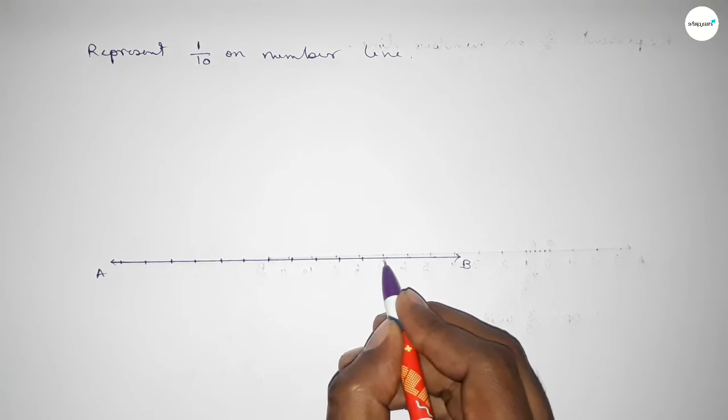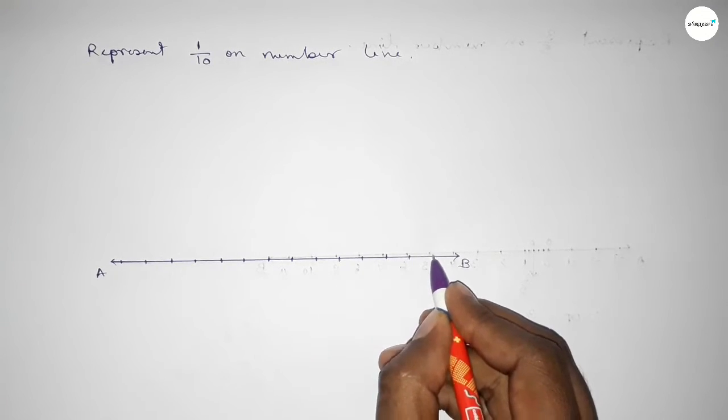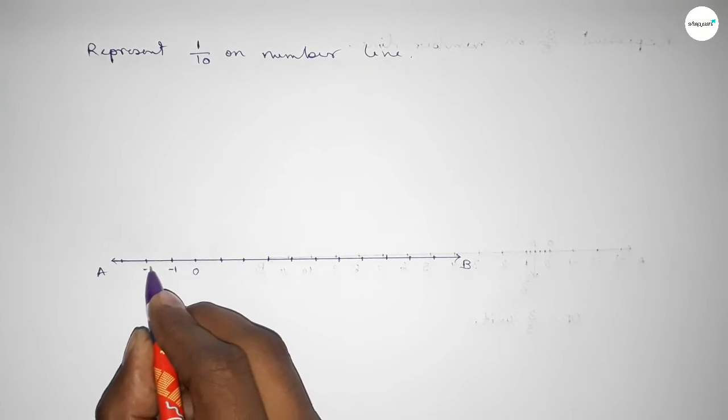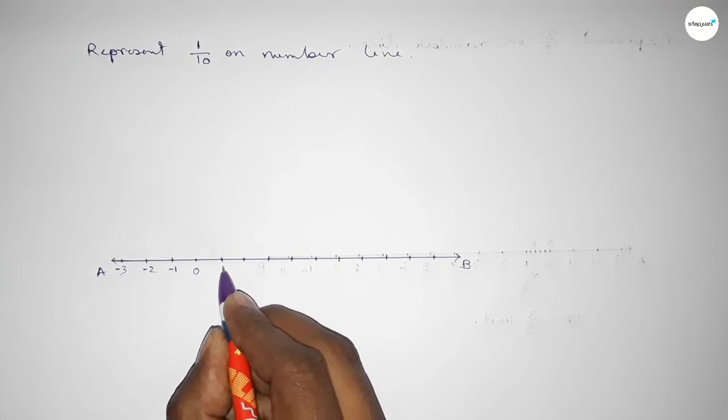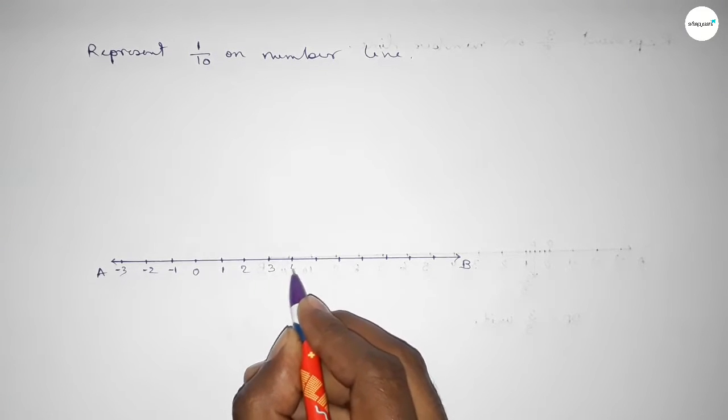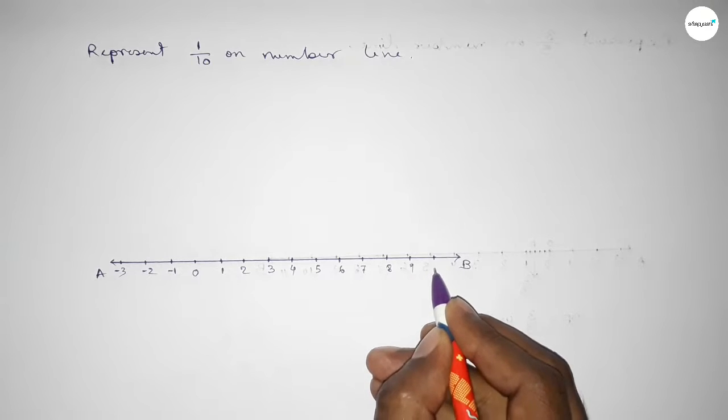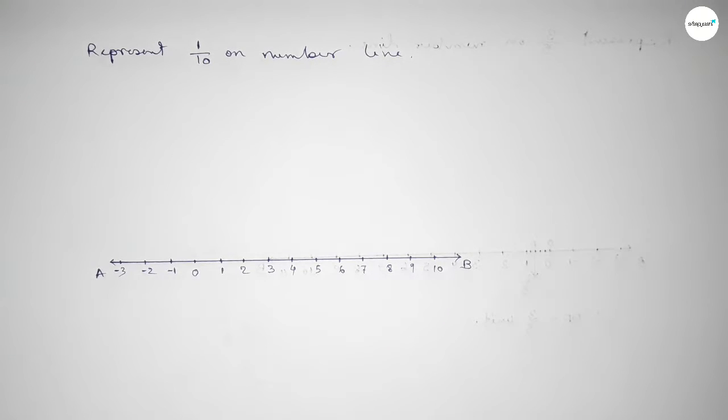So first drawing here the number line. Taking here starting number zero, this side minus one, minus two, minus three, and this side plus one, two, three, four, five, six, seven, eight, nine, ten. Now we have to